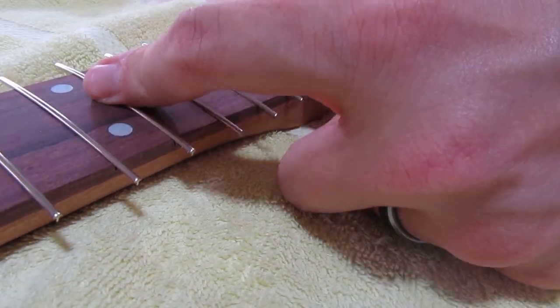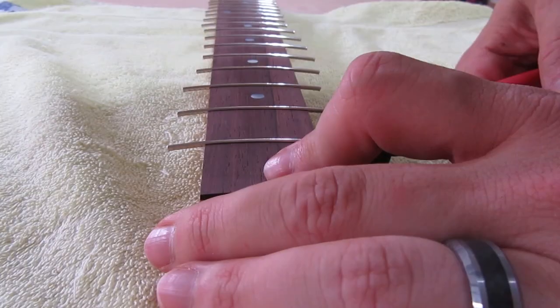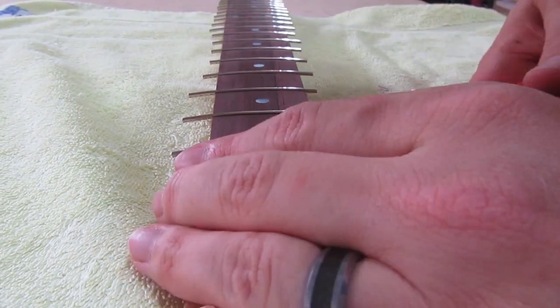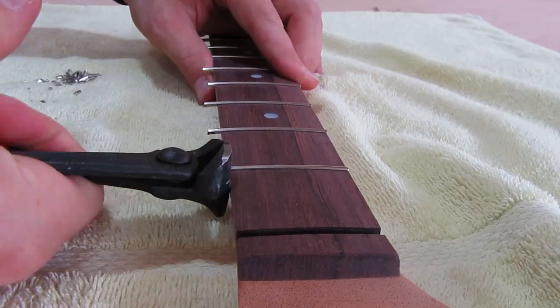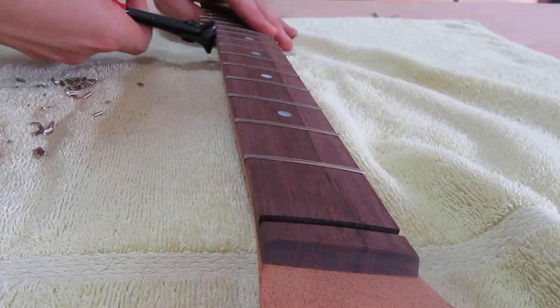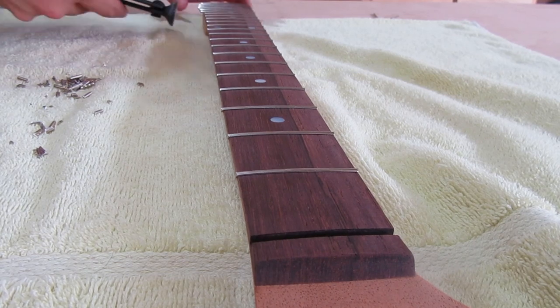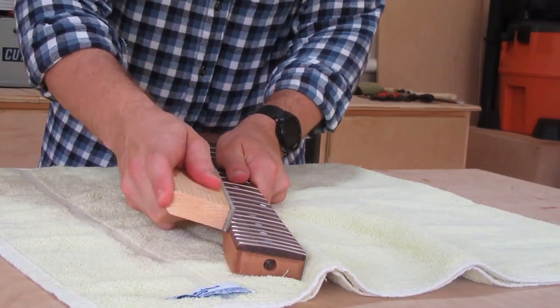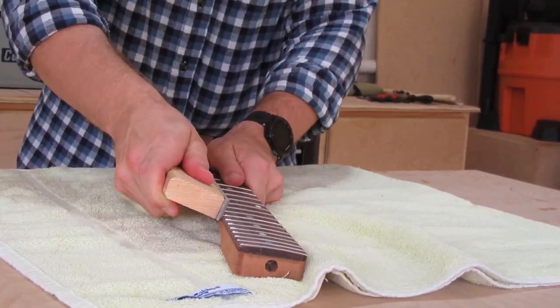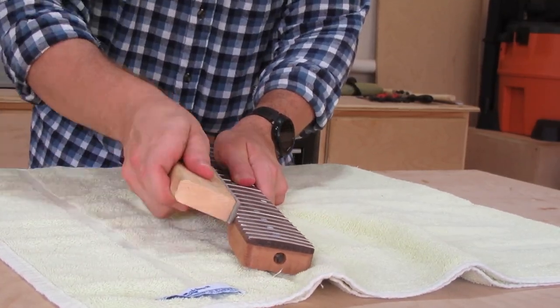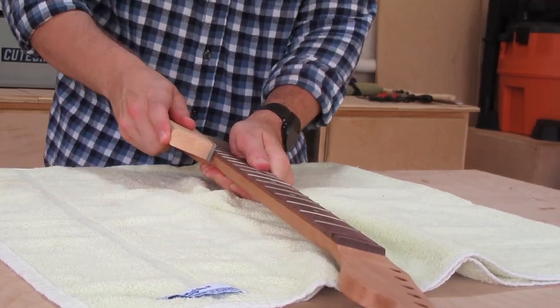After you're done with all the frets you have to go through and nip the ends off. So here I have a special set of trim nippers and you just go through and you can flush trim them to the side of the guitar. Now you won't get perfectly flat with these and what you have to do is you have to go back with a flat file and just file it down. And you'll know when you actually hit the wood because the metal makes a much different sound on the file than the actual wood does.